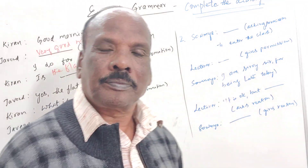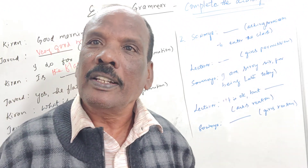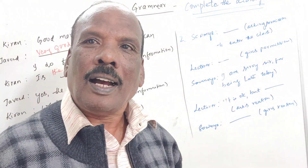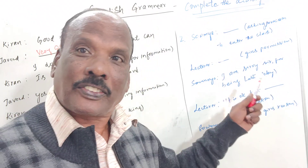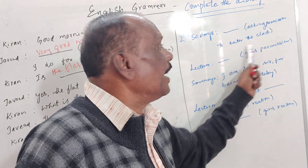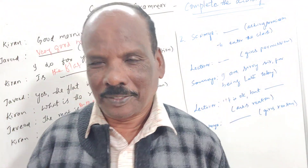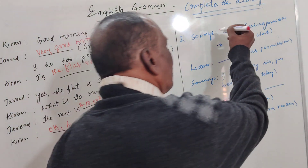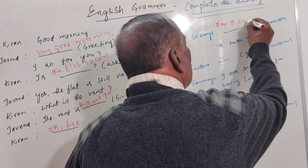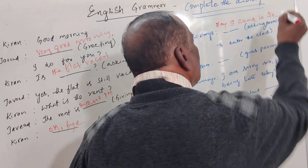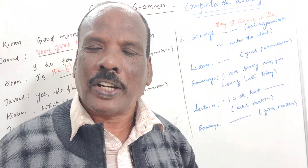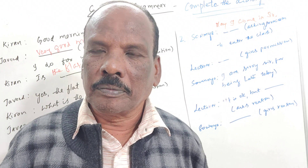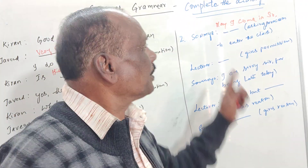Coming to the next dialogue — it is a conversation between a student and a lecturer. Soumya is the student. She is asking permission to enter the class: 'May I come in, sir?' The lecturer gives permission: 'Yes, come in, please.'